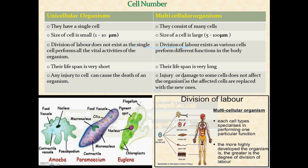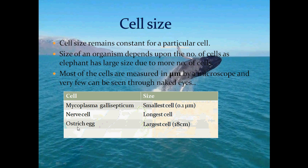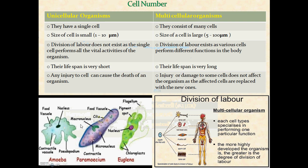In multicellular organisms there are multiple cells which perform different functions in the body. In unicellular organisms a single cell performs all functions, meaning the body structure is simple and not very complex. But in multicellular organisms the body organization is very complex — they have different systems to perform functions like respiration, digestion, excretion, and reproduction.